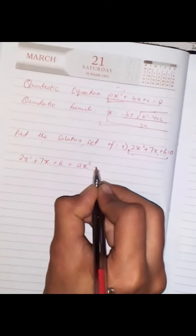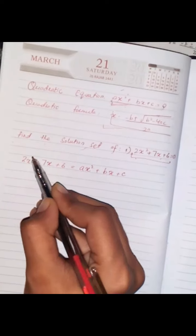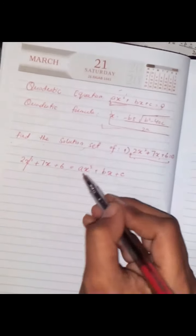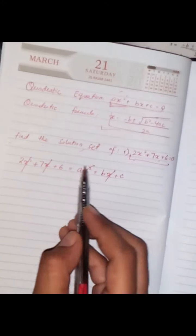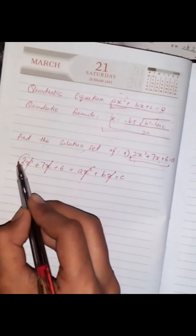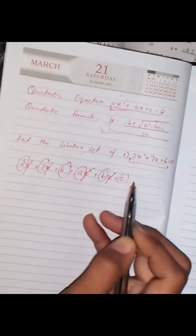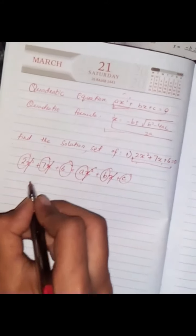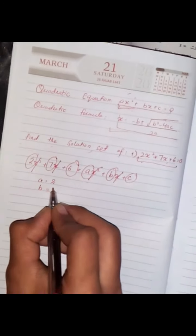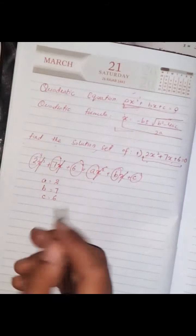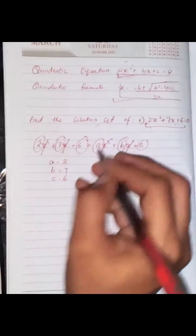We can cancel the same variable x², then x. Now we have the remaining numbers: 2, 7, and 6. Here a, b, c are variables, so let's suppose a equals 2, b equals 7, and c equals 6.